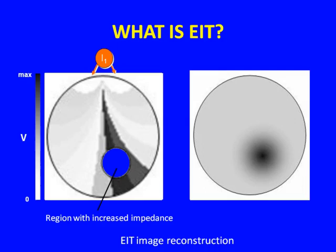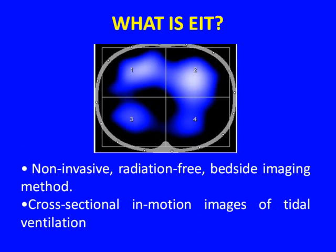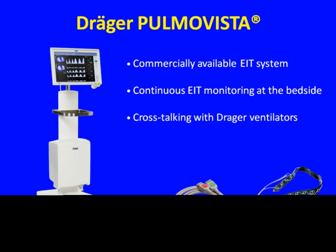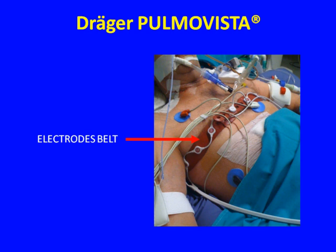Then you have some algorithm of reconstruction and you get an image. Basically, the electrical properties of these zones makes them visible from the outside — non-invasively and radiation-free. EIT is a non-invasive, radiation-free bedside imaging method that can give us cross-sectional, instant, in-motion images of ventilation. The Pulmovista is a non-invasive device by Draeger that is commercially available and is the EIT system we use on our patients.